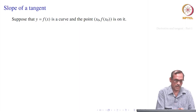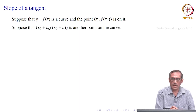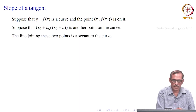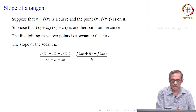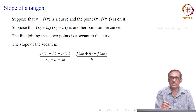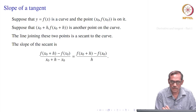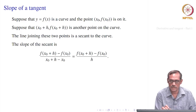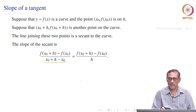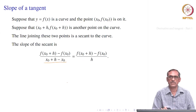Suppose y = f(x) is the curve and we take two points P and Q, then we join them to get the secant. The slope of the secant is (y₂ − y₁)/(x₂ − x₁), which for Q and P gives [f(x₀ + h) − f(x₀)] / [(x₀ + h) − x₀], simplifying the denominator to h. We get this ratio: increment in f divided by increment in x.